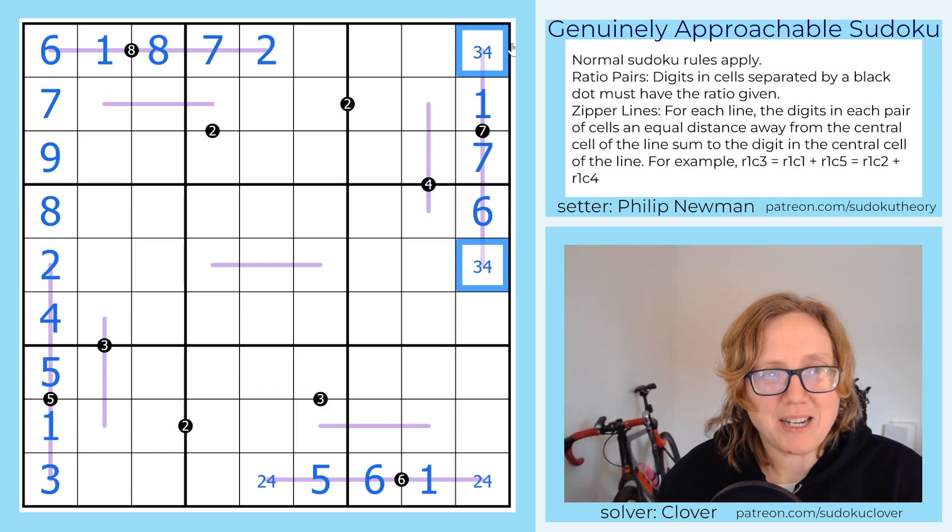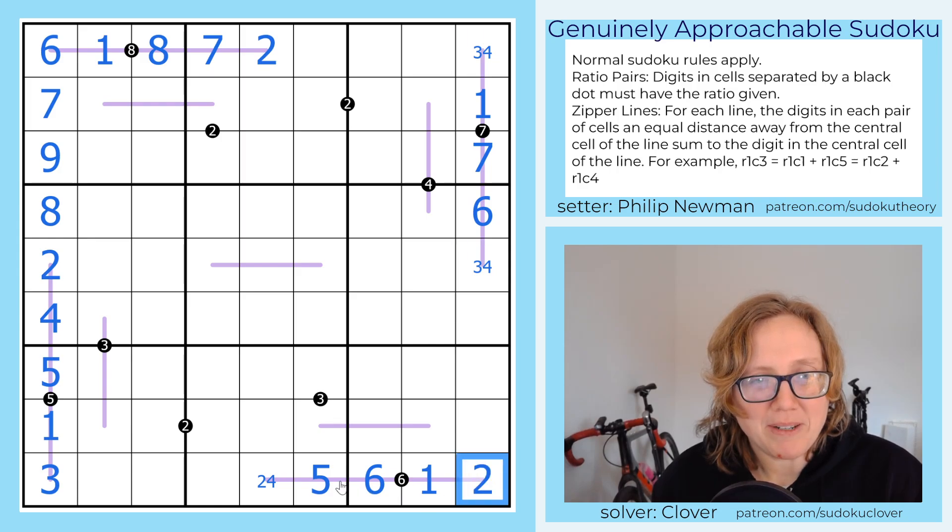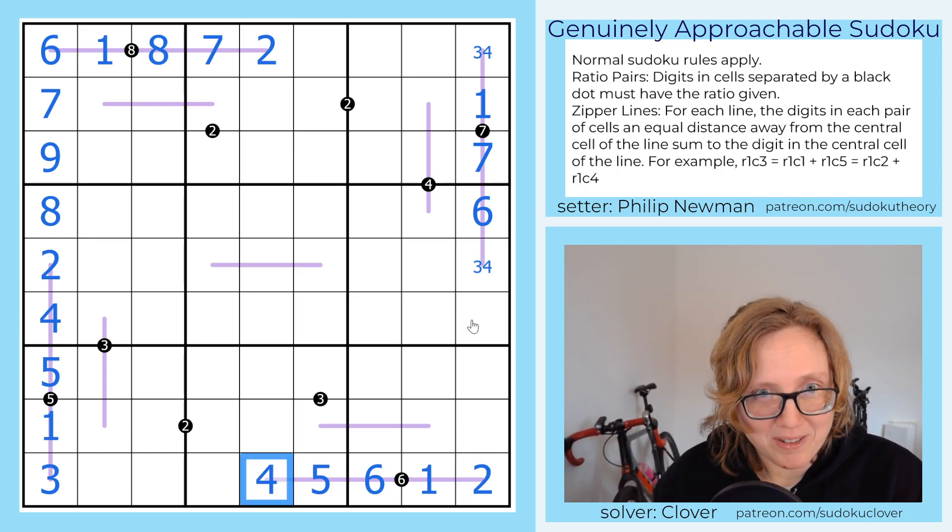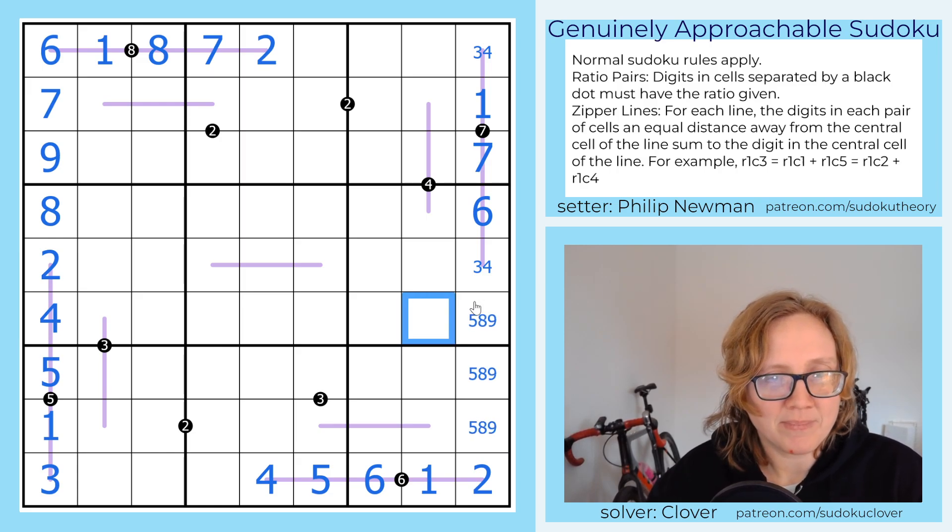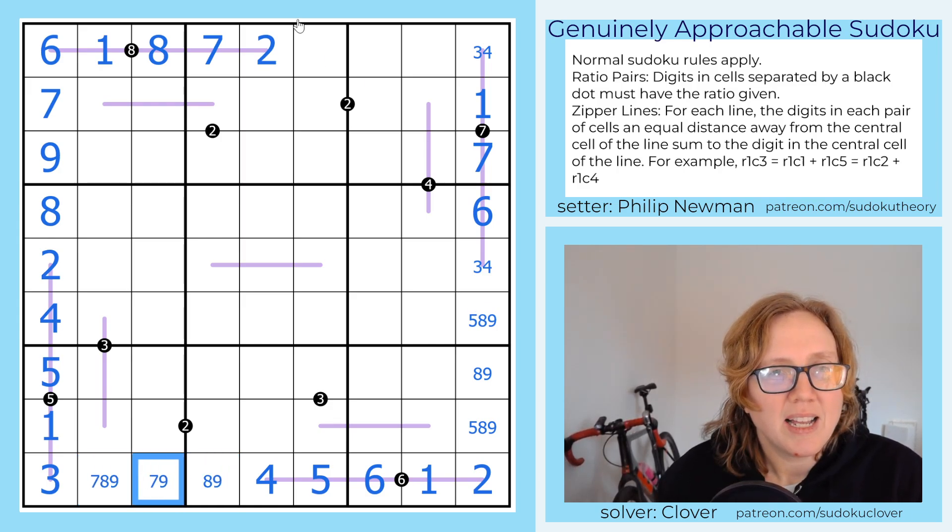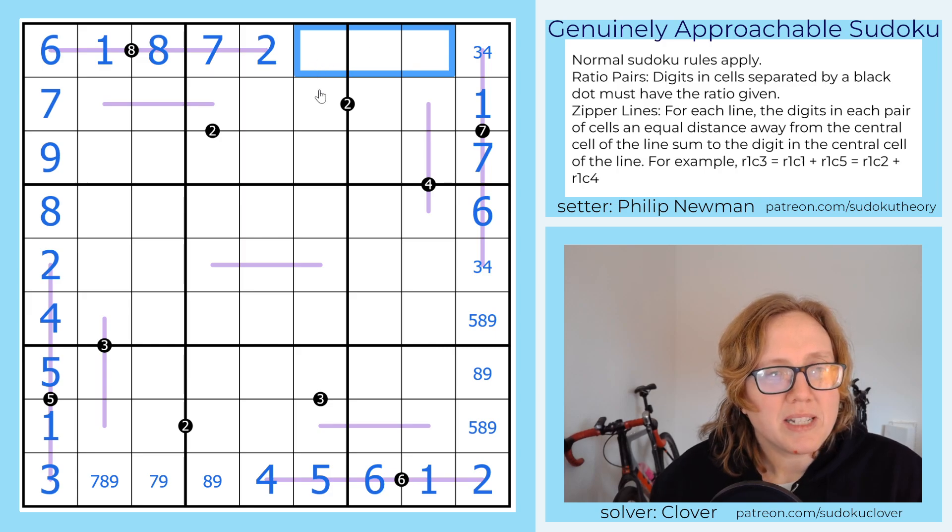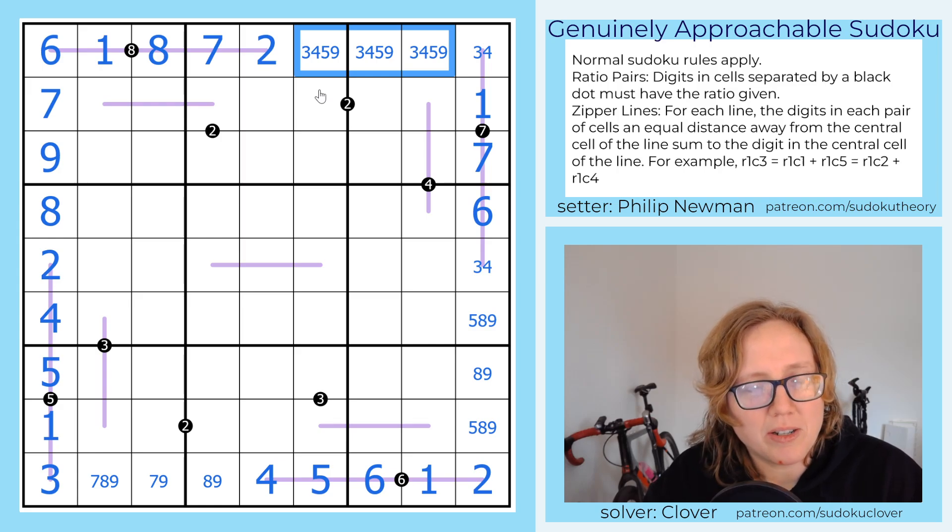And that has to be 2, because 6 plus 2 is 8. So this can't be 2, and this can't be 5. And we also can resolve our 7, 9 pair now, because we have this 7 here. Beautiful. We now know this is a 3, 4 pair, because we got rid of 2 from both ends, so it definitely can't be 2 plus 5. So with a 3, 4 pair there, that's now a 2, and that's now a 4. What do we have left in this column? We need 5, 8, and 9. And I don't think we're going to squeeze a whole lot more out of these long zipper lines, so let's see what we can do with the rest of the grid.